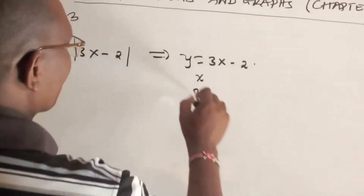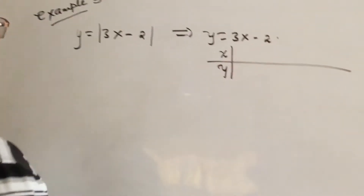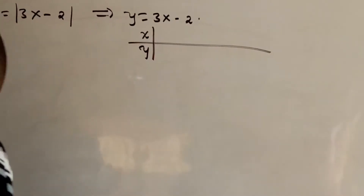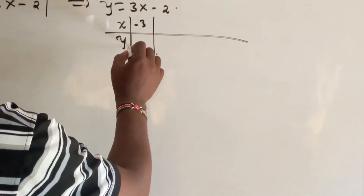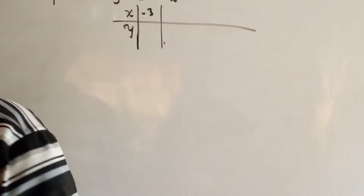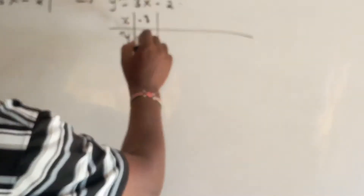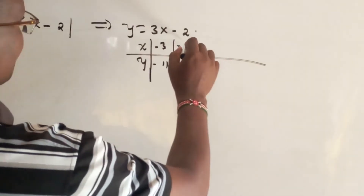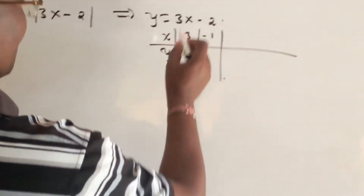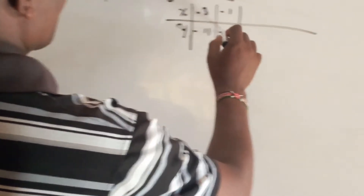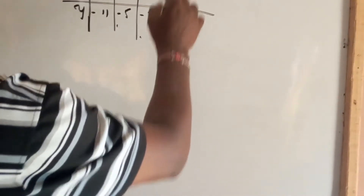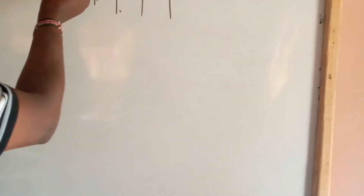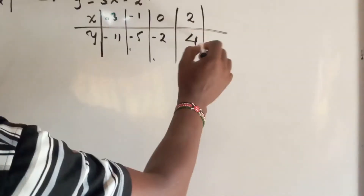The very first thing we do is sketch the graph of y is equal to 3x minus 2. We have x and y, and let us tabulate this. When x is minus 3, y is 3 times minus 3 minus 2, which is minus 9 minus 2, giving minus 11. When x is minus 1, y is minus 3 minus 2, giving minus 5. When x is 0, y is minus 2. When x is 2, y is 6 minus 2, which is 4.